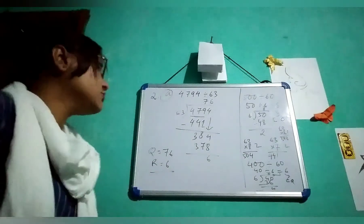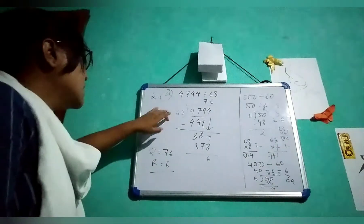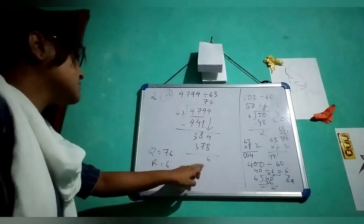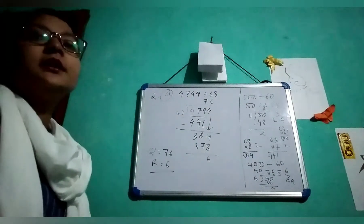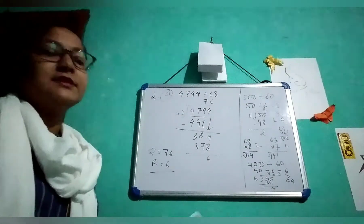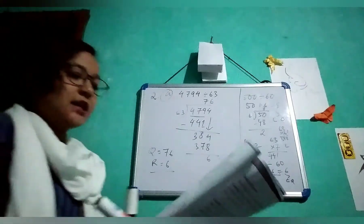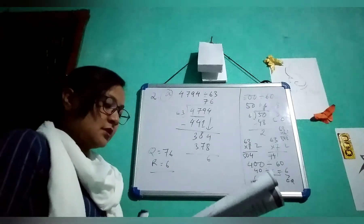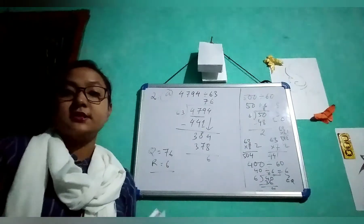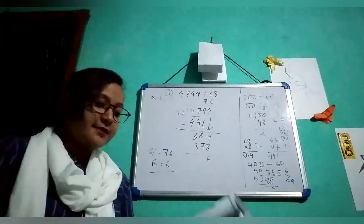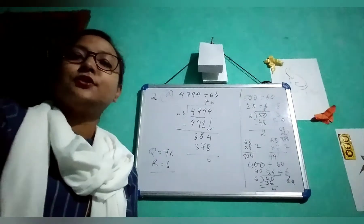If you have confusion, you do the multiplication: this one times this one plus this one. If you get 4794, that means your division is correct. This way, I think you can do the other questions. Thank you for watching. In the next class, I will do the word problems. Thank you.